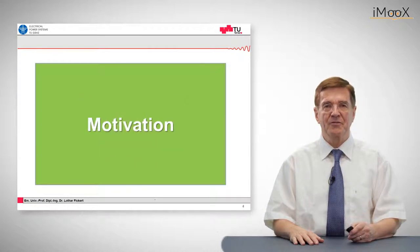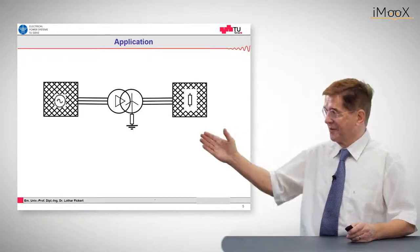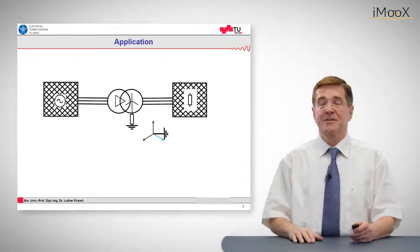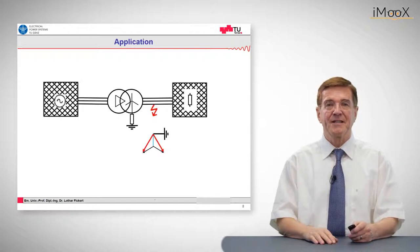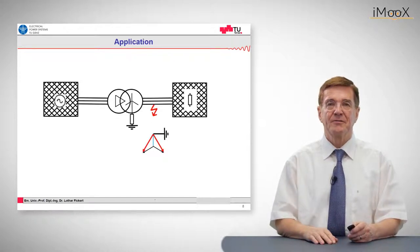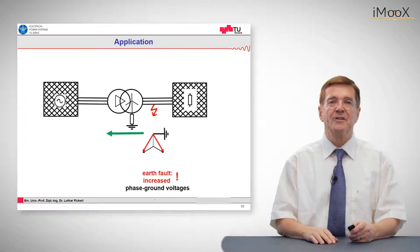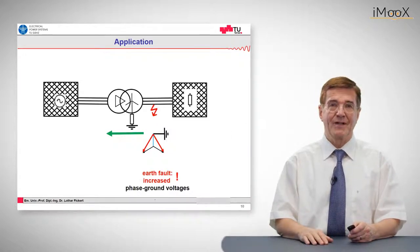These transformer vector groups are motivated by the fact that earth faults on one side of the system, in this case on the right side, which change the voltage from regular voltage into elevated voltages on the secondary side, should not be transferred to the primary side. And this is done by this vector group and vector arrangement of the transformer windings,